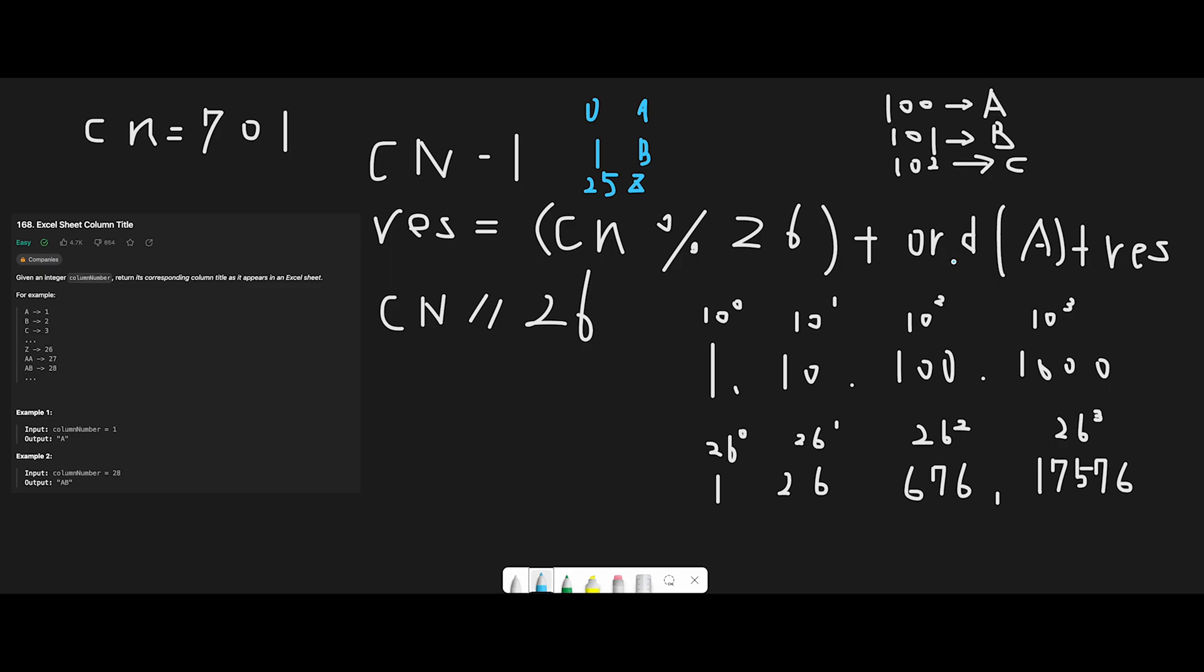And then plus current result string character. First of all, this is an empty string, and then create a new result. That is the second part. Next, we divide current column number by 26, the number of alphabets.